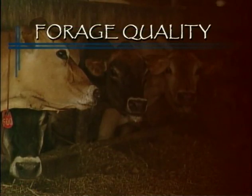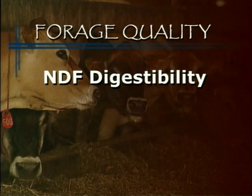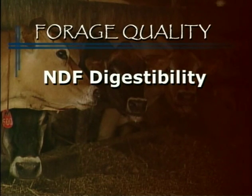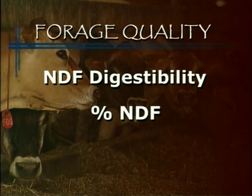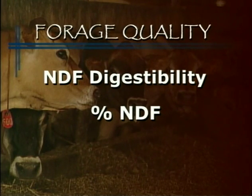So how do we define forage quality? NDF digestibility tells you how fast that cell wall can be broken apart, and percent NDF tells you what percentage that cell wall is of the total plant. Those are two major aspects of forage quality.